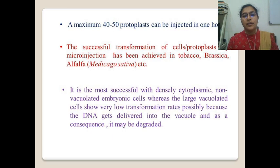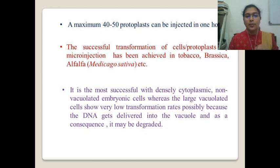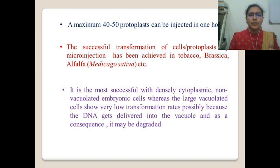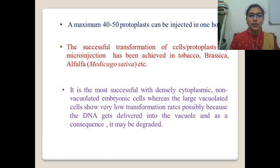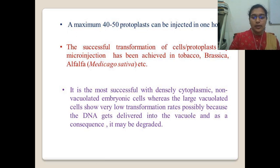The method of microinjection is technically more demanding and time consuming. A maximum of 40 to 50 protoplasts can be injected in one hour. Successful transformation of the cells or protoplasts has been achieved in tobacco, brassica, alfalfa plant, etc. It is most successful with plants having dense cytoplasm and non-vacuolated embryonic cells, whereas large vacuolated cells show a low rate of transformation, possibly because the DNA first gets delivered into the vacuole and as a consequence may be degraded.